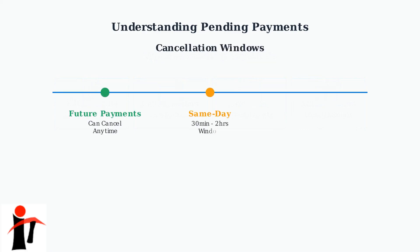The ability to cancel a pending payment depends on its status. Future-dated payments can typically be canceled anytime. Same-day payments have a short window of 30 minutes to 2 hours. Once a payment is processing, it usually cannot be canceled through the app.